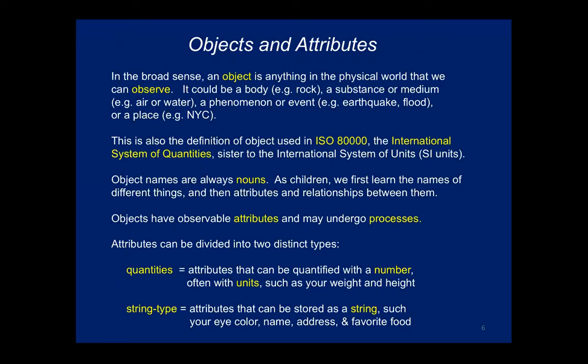These objects have attributes and can undergo processes. A piece of a glacier could undergo melting, calving, sublimating, or sliding. There are quantities that quantify those processes — how fast does it melt or calve? You can divide quantities into two main types: quantities that quantify an attribute with a number and often have units (like height and weight), and string-type attributes such as eye color or favorite food.